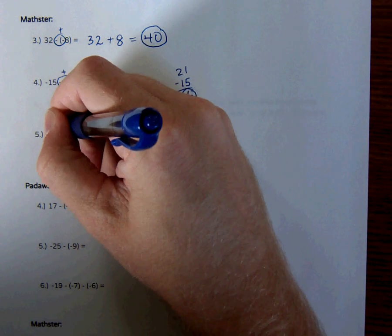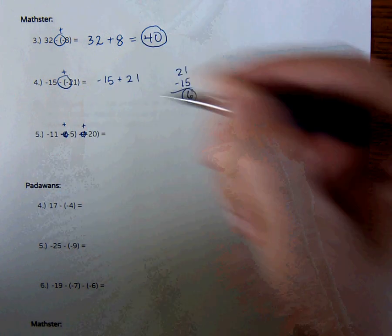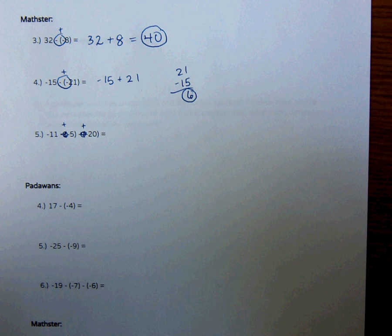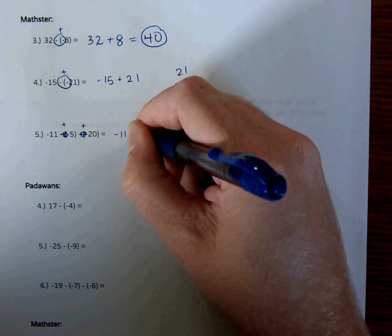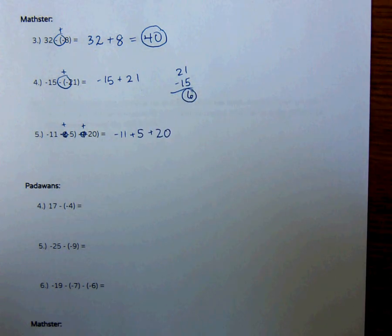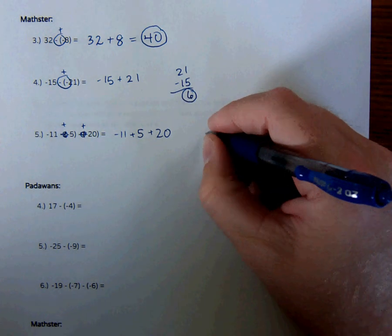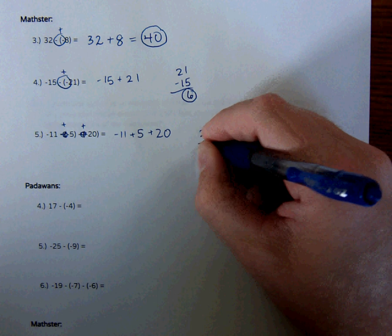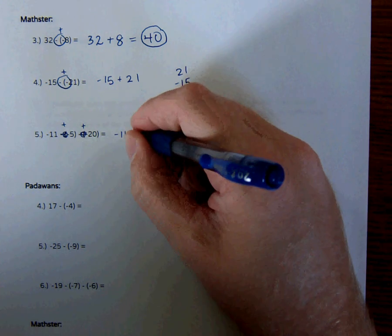I've got multiple of these, so this one is going to become a positive. This is going to become a positive. So when I do that, I make sure I rewrite the question. This is negative 11 plus 5 plus 20. So if I have more than two numbers that I'm adding together, I make sure I combine the ones with the same sign first. So basically 20 plus 5 becomes 25. I'm combining these two right here.